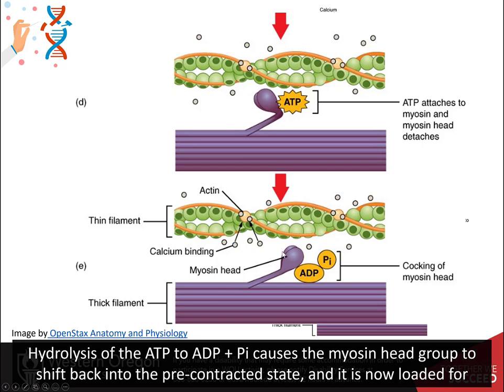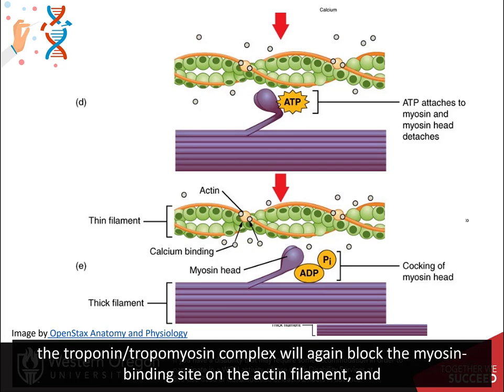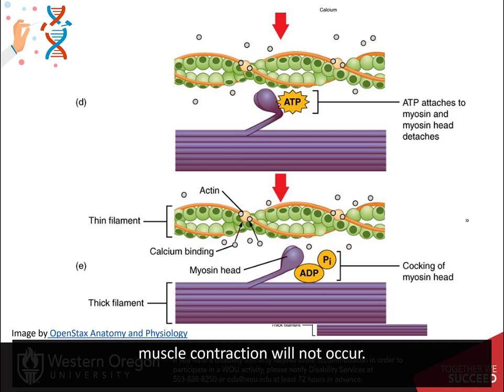Hydrolysis of the ATP to ADP and Pi causes the myosin head group to shift back into the pre-contracted state, and it is now loaded for another round of muscle contraction. If the neuronal signal for muscle contraction stops and calcium levels in the cytoplasm drop, the troponin and tropomyosin complex will again block the myosin binding site on the actin filament, and muscle contraction will not occur.